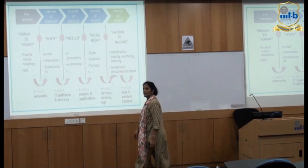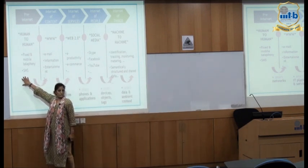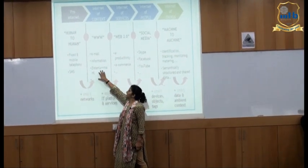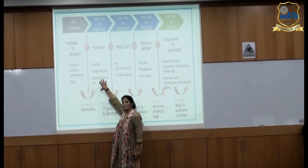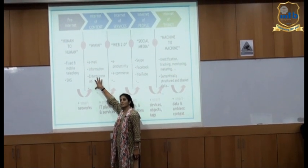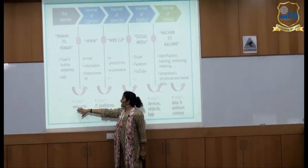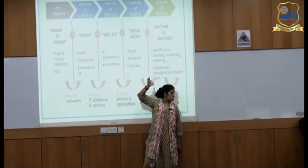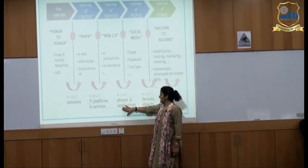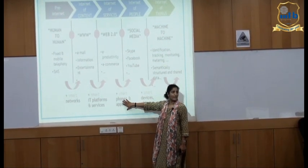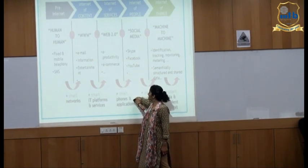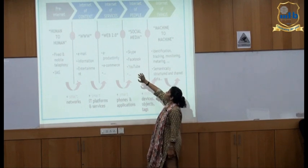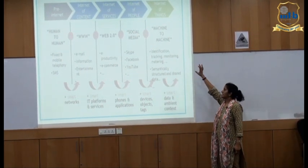On the left we have the pre-Internet era with fixed and mobile telephony. We added smart networks to come into the Internet era — emails, websites, information and entertainment. Then smart platforms and services brought e-services and e-commerce. Then smartness came to every person's hands with smartphones, giving us social media and an Internet of people. So we have Internet of content, Internet of services, Internet of people, devices, and then Internet of Things.